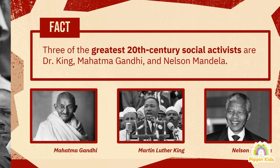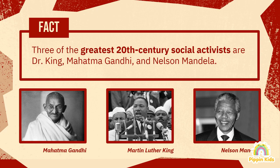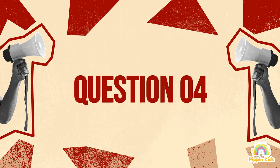This may be new to you, but three of the greatest 20th century social activists are Dr. King, Mahatma Gandhi, and Nelson Mandela. Mahatma Gandhi was an Indian independence activist best known for his philosophy of non-violence and leading India to independence from British rule. Nelson Mandela was a South African anti-apartheid revolutionary best known for ending segregation and racial discrimination in South Africa, serving as president from 1994 to 1999.